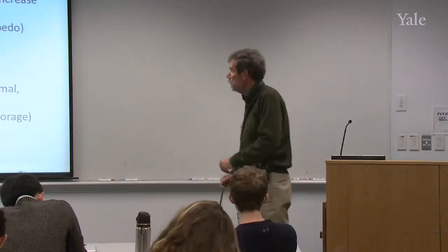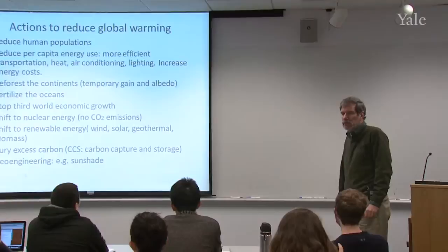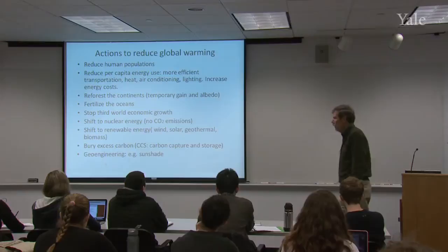So this is a long list of things that one might do to reduce global warming, but they're all very difficult, if not impossible. Are there any points you want to make about these? Any questions about what I mean by them? I think we did go over this last time, if I'm not mistaken.